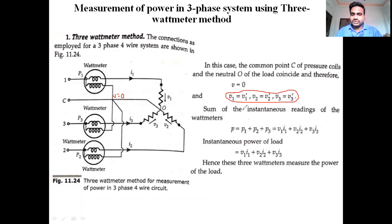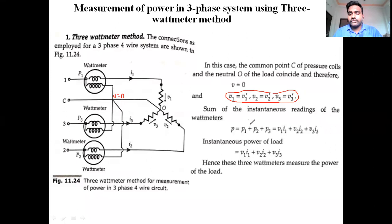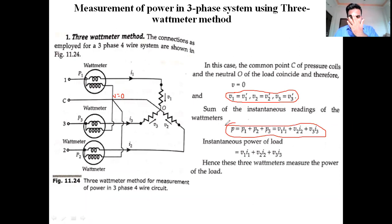Taking that expression into the sum of instantaneous readings, total power P = P1 + P2 + P3. That is the behavior of instantaneous power. If you have any doubts, please let me know in the chat.